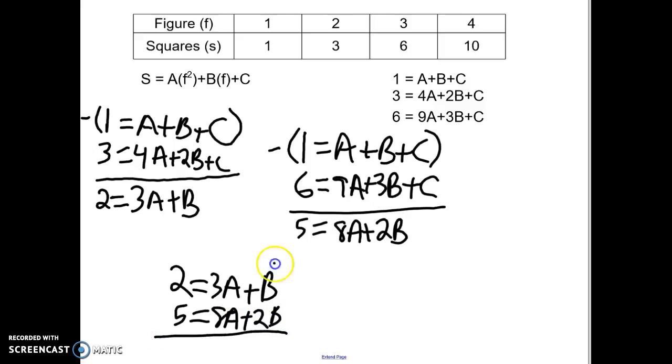What's the easiest thing to cancel? This time it's going to be multiplying the first line by negative 2 because then my b's will cancel. If I do that, negative 4 plus 5 gives me 1, negative 6 plus 8 gives me 2a, and my b's cancel, which means that a is equal to 1 half.